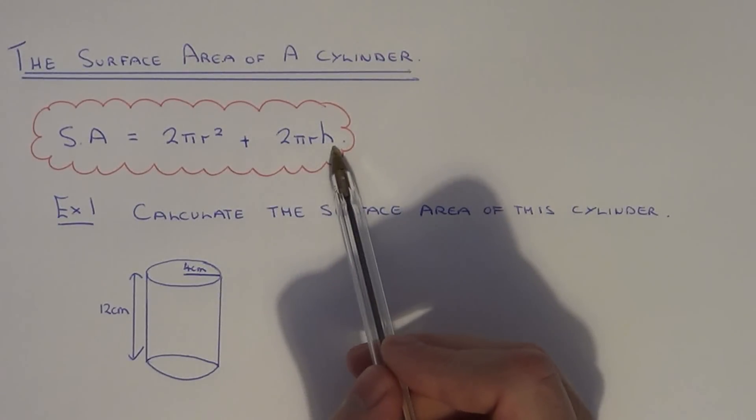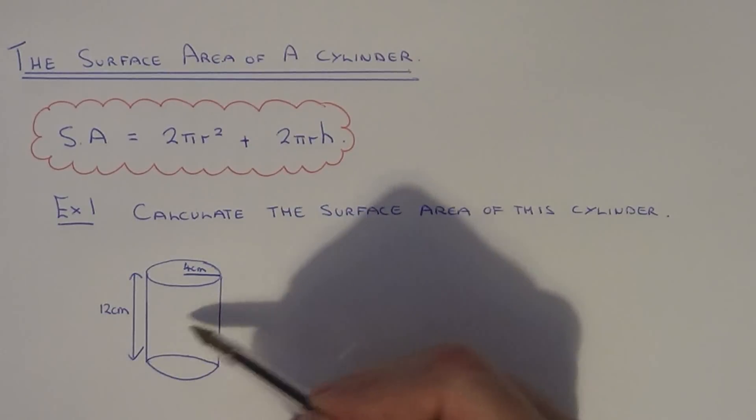This bit here, 2πrh, gives you the area of the rectangular face.